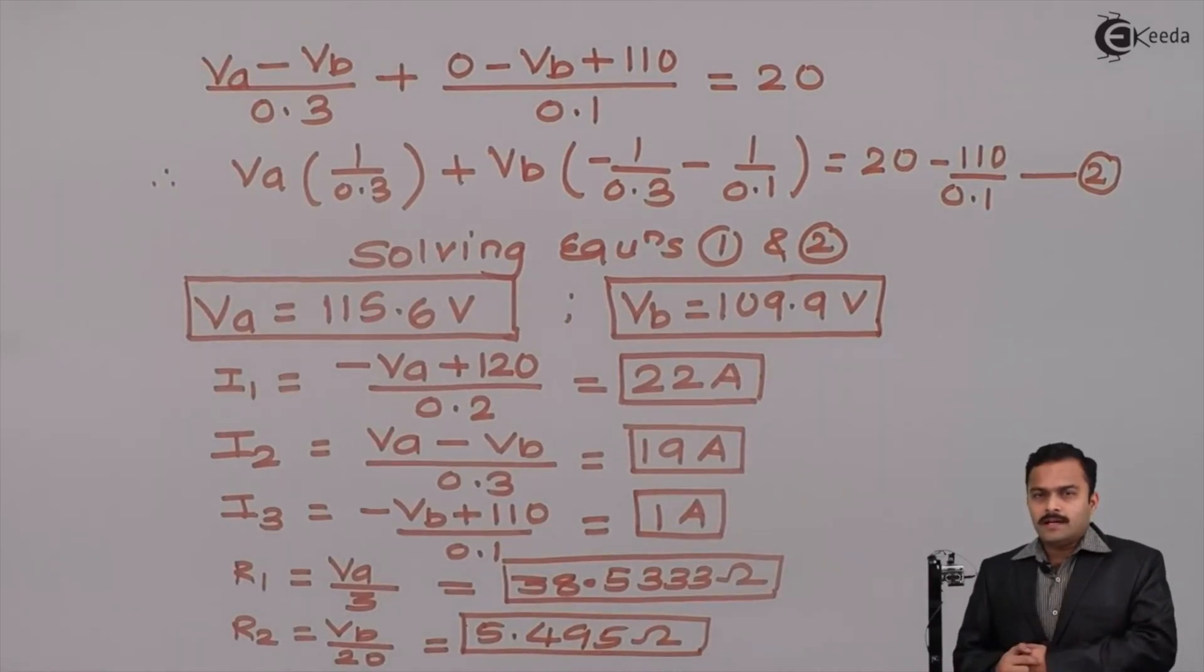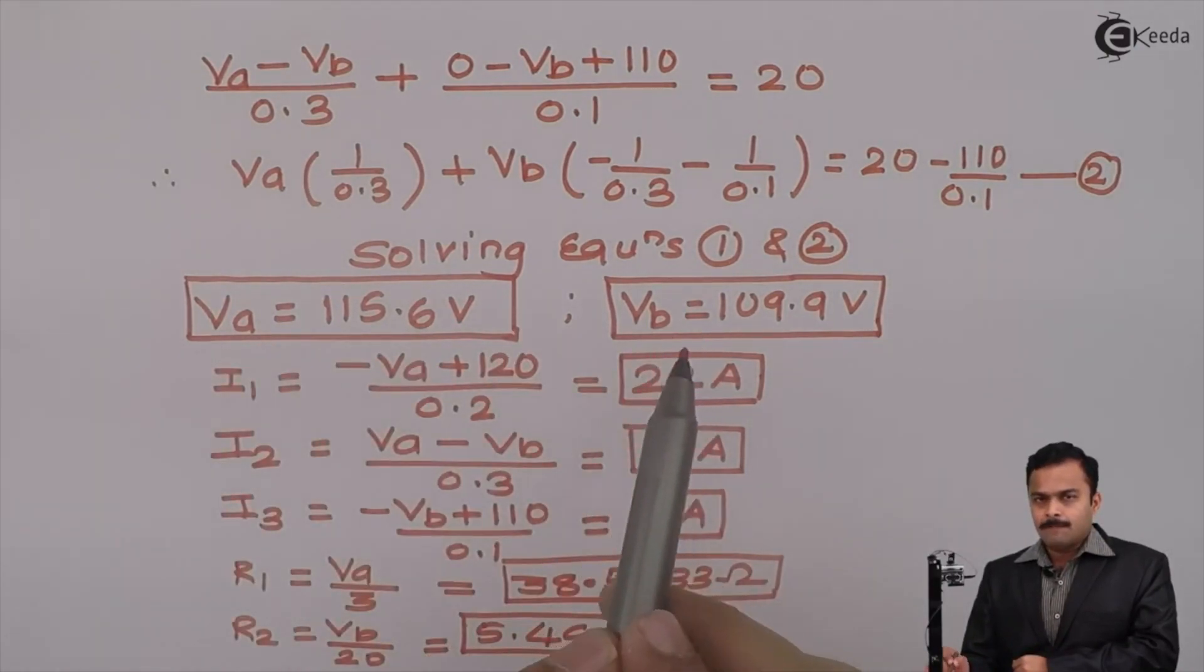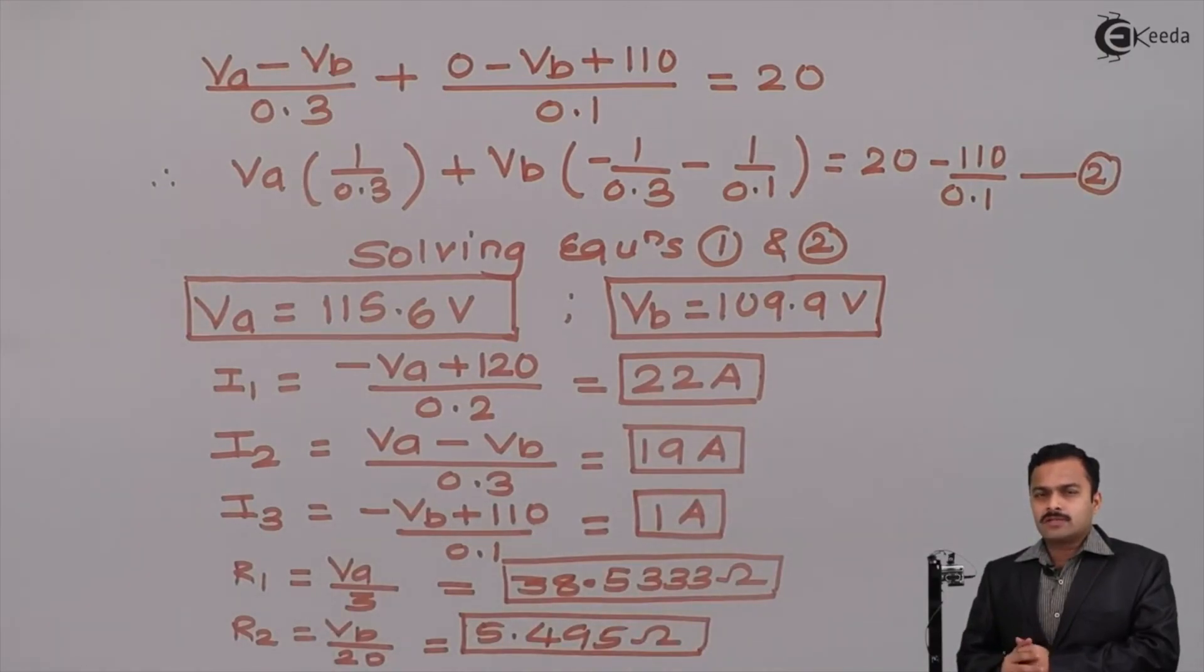So, here we have taken a problem where so many unknowns were given. But still, a powerful technique called as nodal analysis will simplify the circuit and you will get all answers which are linked to these two values Va and Vb. In subsequent videos, we will solve more numericals based on nodal analysis. Thank you.